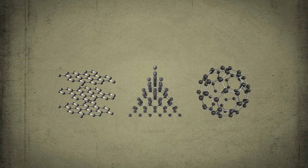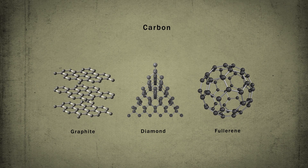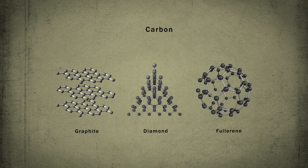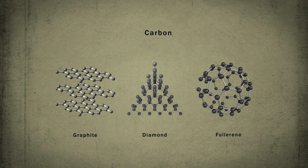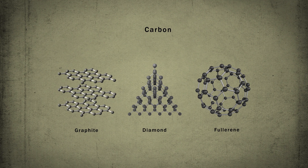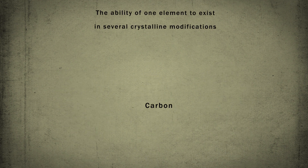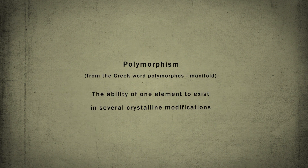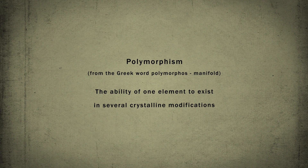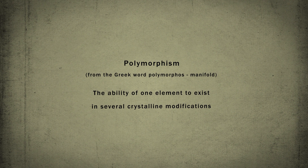Some elements can change their crystalline structure, i.e. the type of crystal lattice, depending on external conditions such as temperature and pressure. The ability of one element to exist in several crystalline modifications is called polymorphism or allotropy.